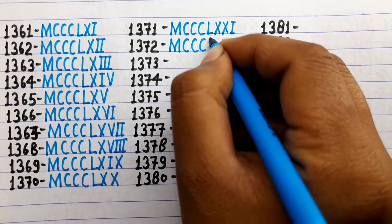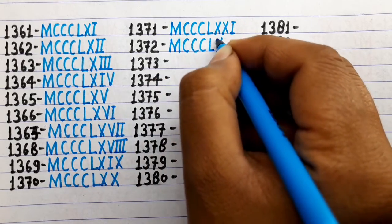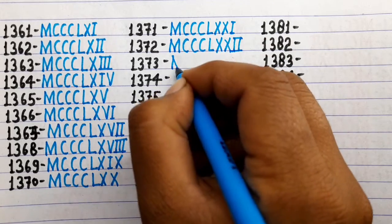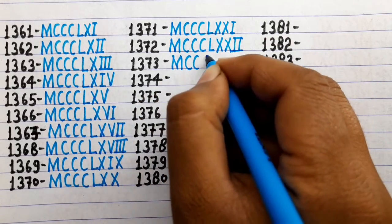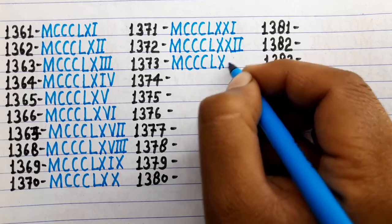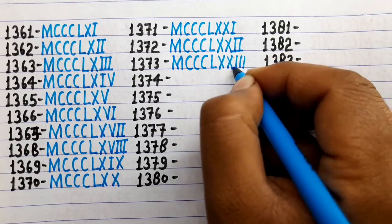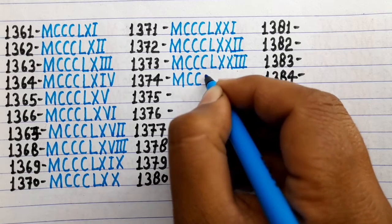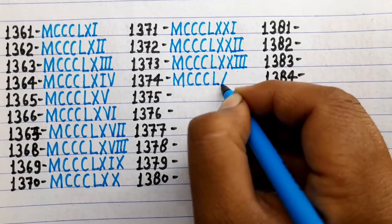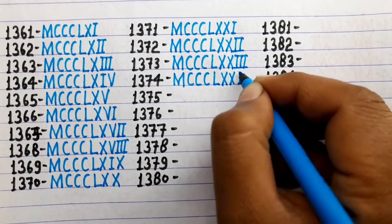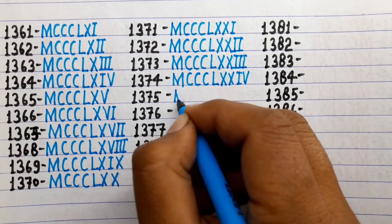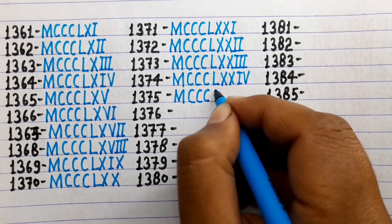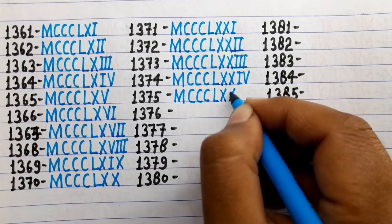1372 is MCCCLXXII. 1373 is MCCCLXXIII. 1374 is MCCCLXXIV. 1375 is MCCCLXXV.